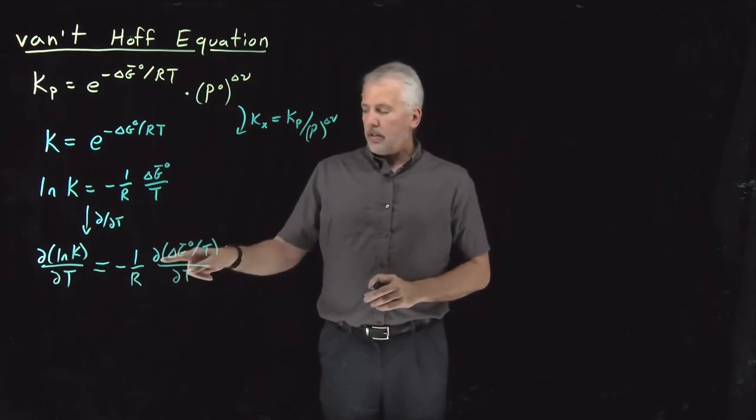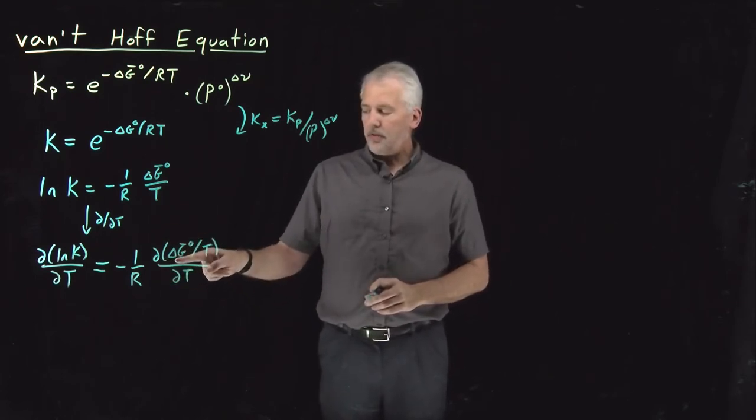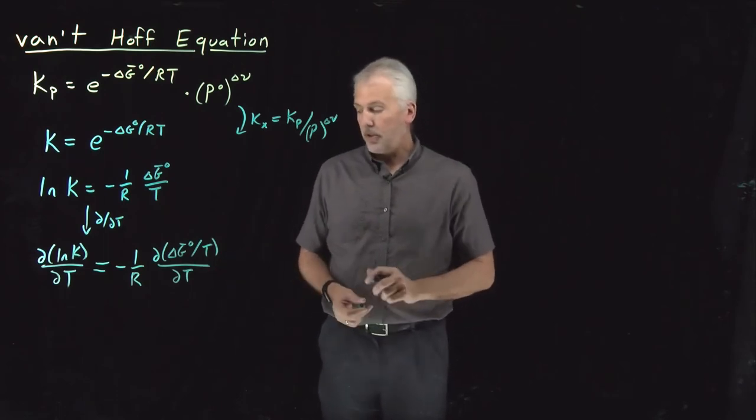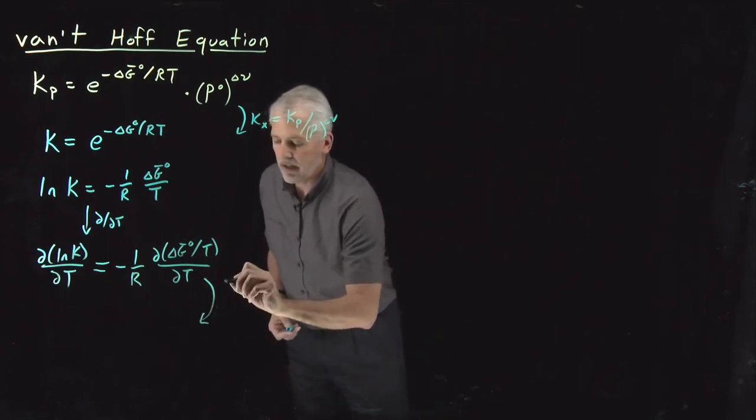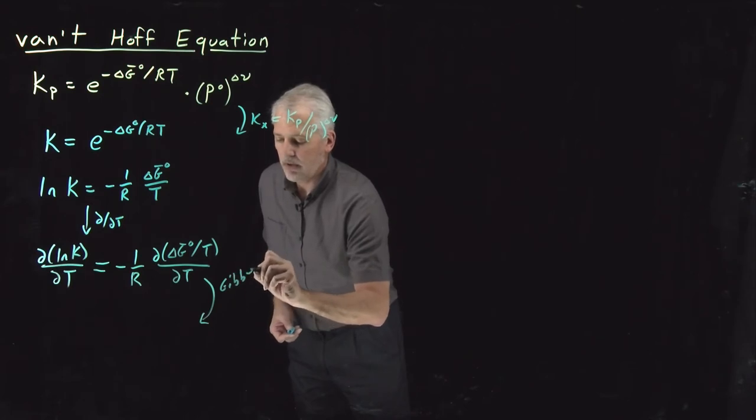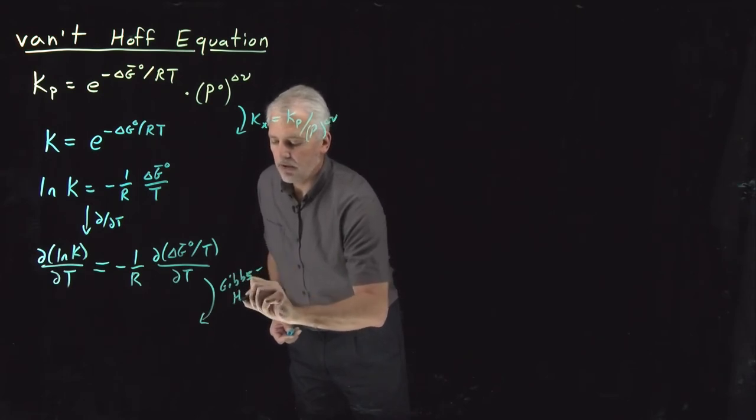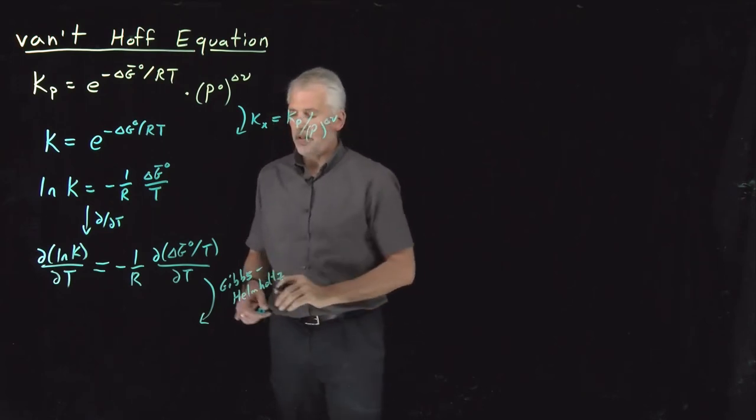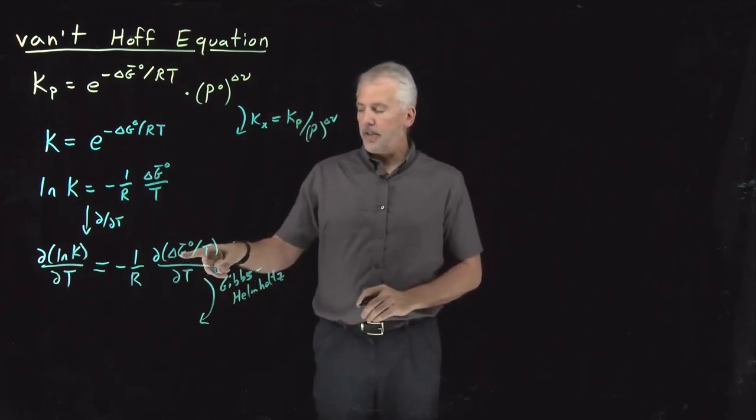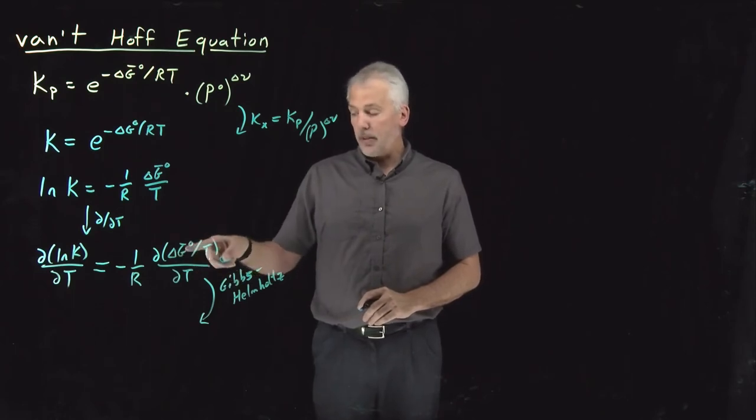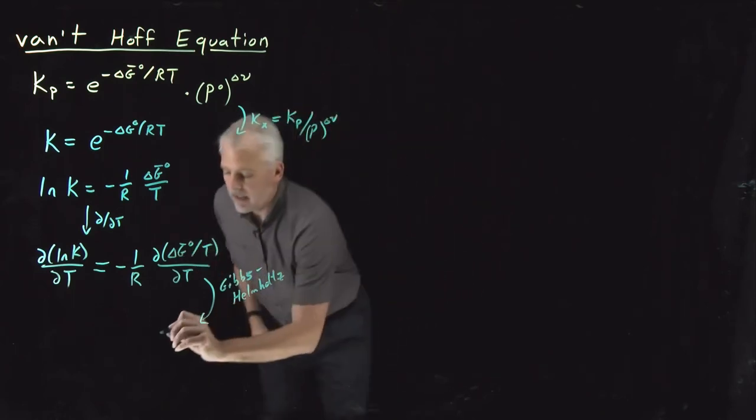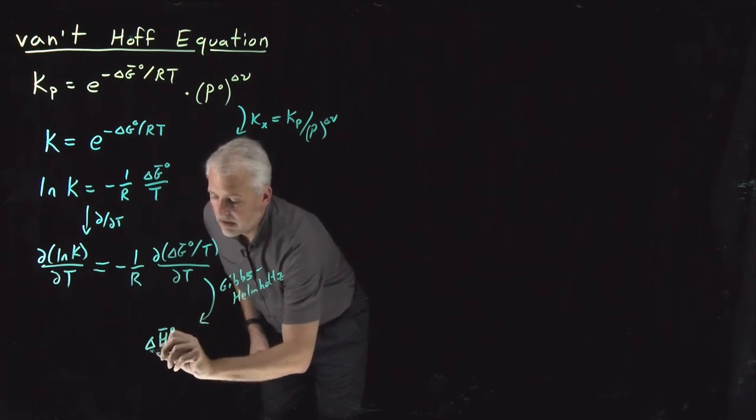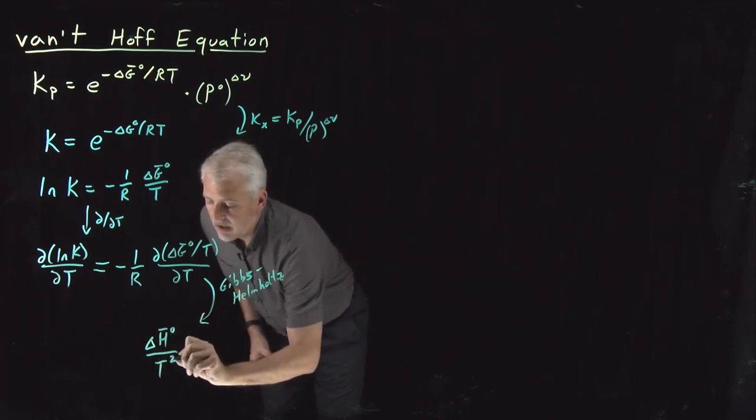That quantity, temperature derivative of G over temperature, might look familiar, should look familiar. That's something that we understand using the Gibbs-Helmholtz relation. The Gibbs-Helmholtz is an enthalpy over T squared with a minus sign.